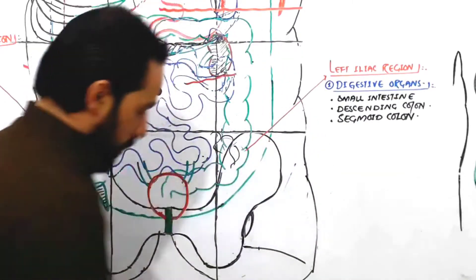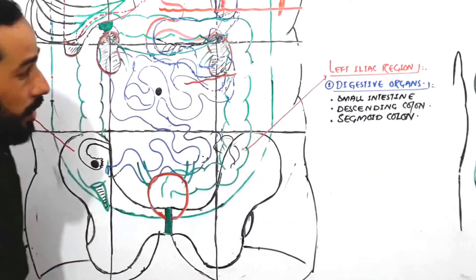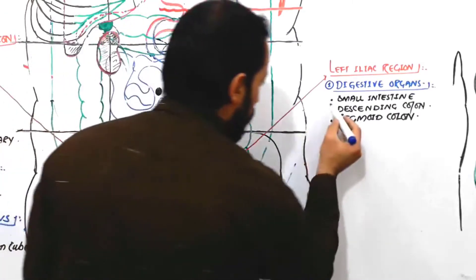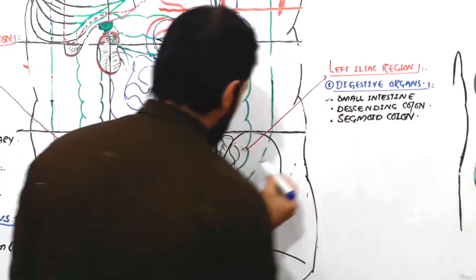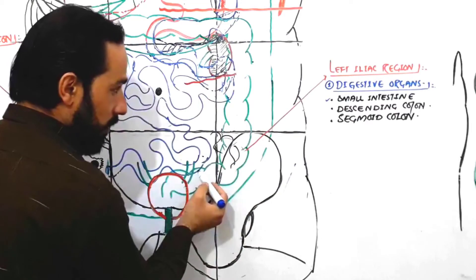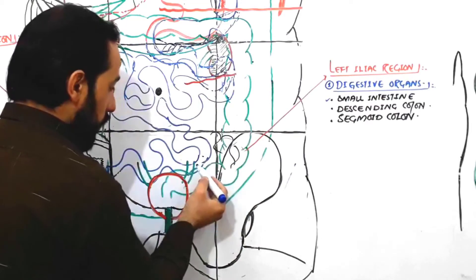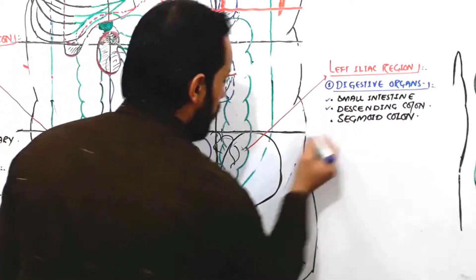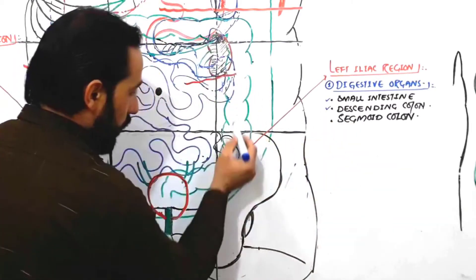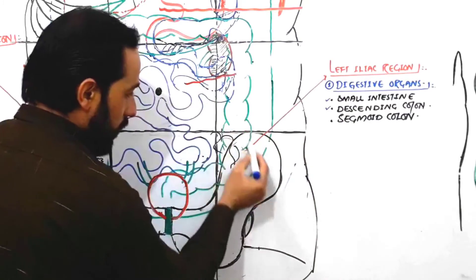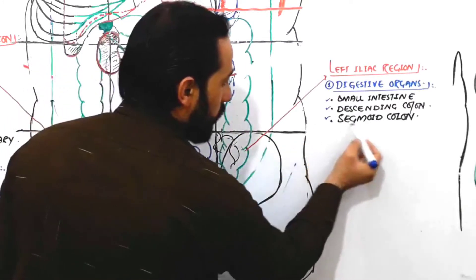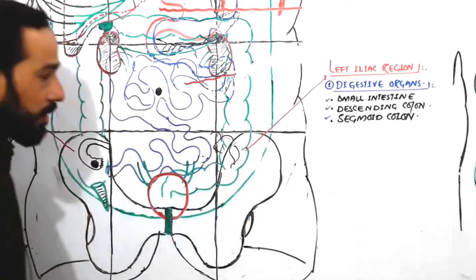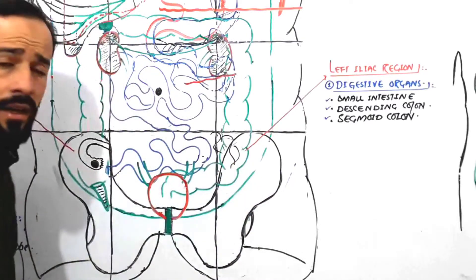So the digestive organs found in the left iliac region are: the last parts of the small intestine — specifically the last parts of the jejunum — some parts of the descending colon, and the sigmoid colon.